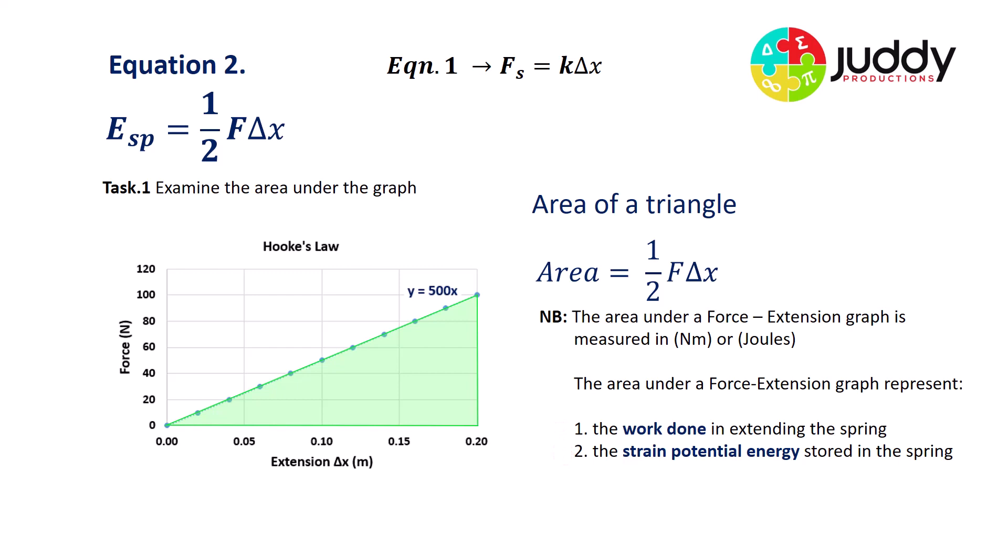If we apply a force and we extend a spring, we're obviously doing work on it, applying a force over a distance. So that represents the work done on the spring. While we apply a force and we extend or stretch our spring, obviously the spring also gains energy, and that's equal to that work done. So the area under this graph represents the work done on the spring while it's being extended, and this is equal to the gain in strain potential energy that's stored in the spring.